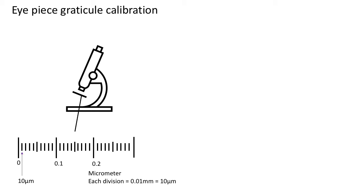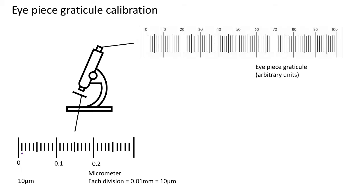On the micrometer we know the measurements, but it's in a fixed position so it's not convenient because it can't move around. However, the eyepiece graticule which is in the eyepiece has arbitrary divisions, but you will always be able to see it, so it's very convenient for measuring the size of objects.